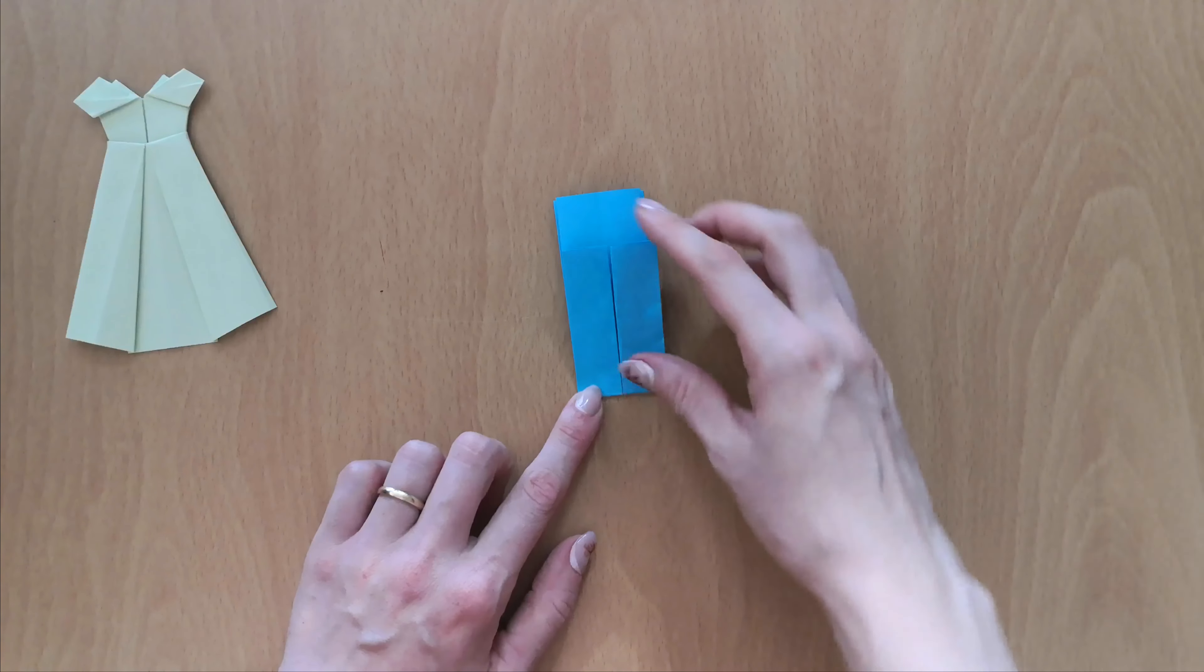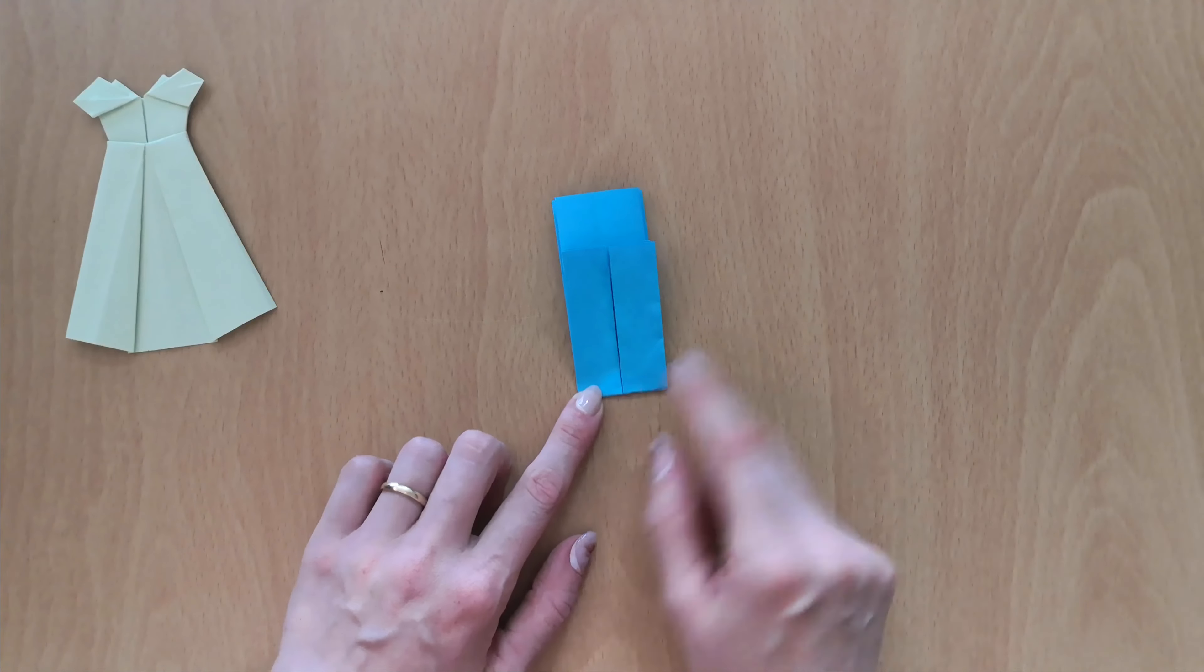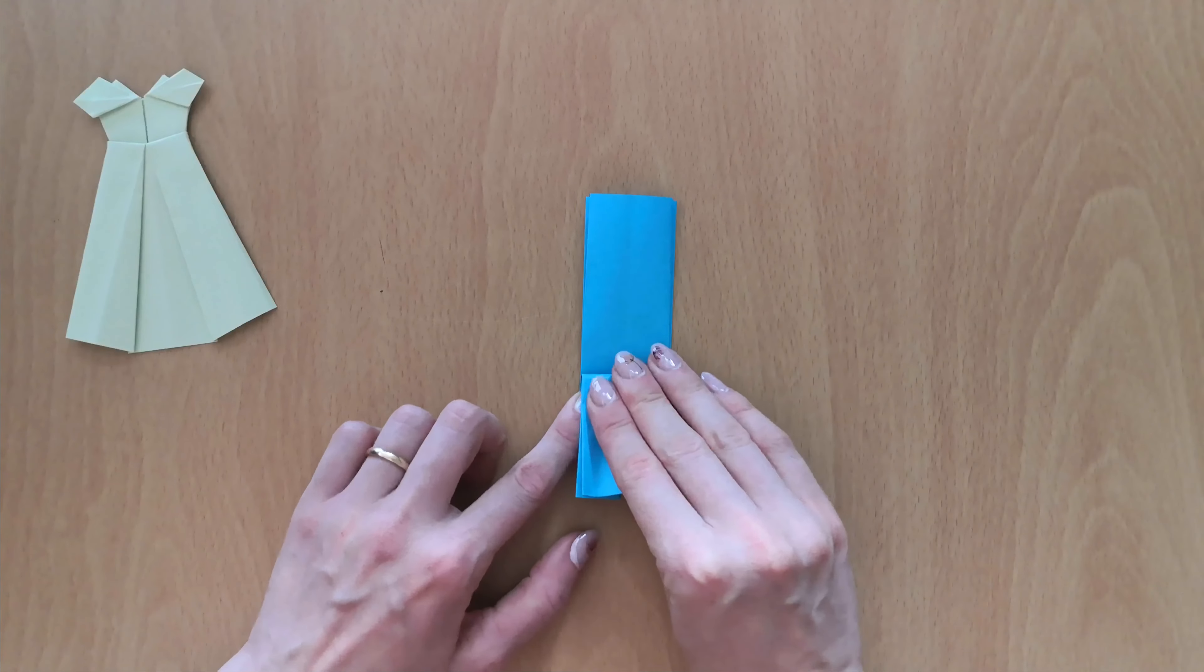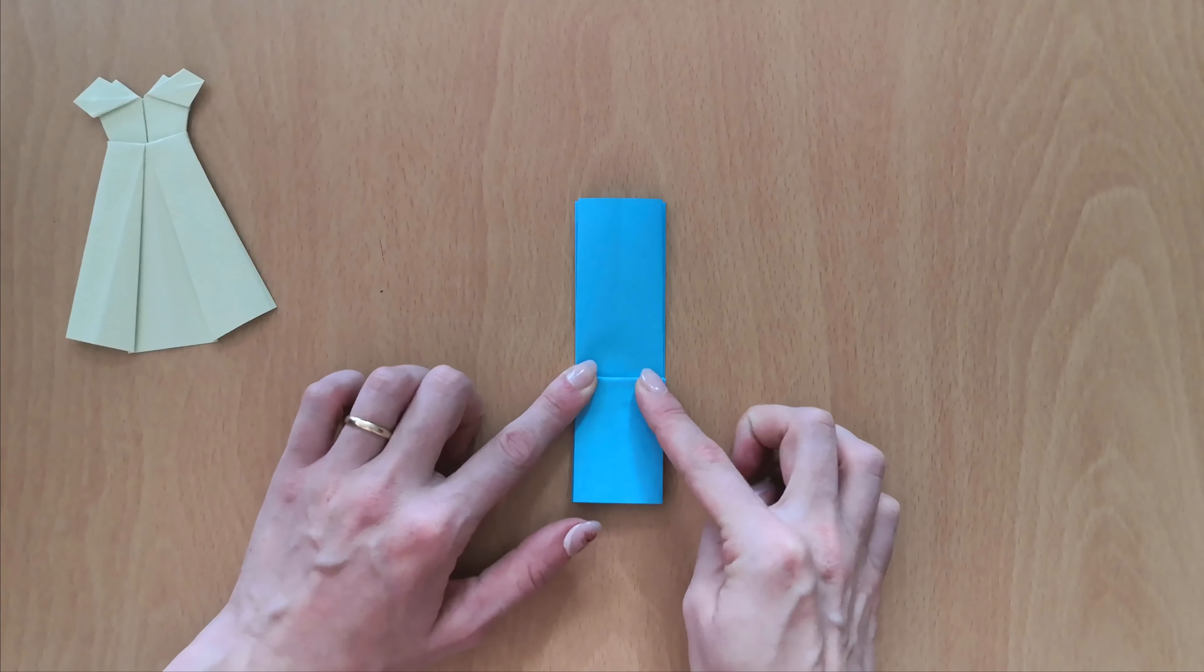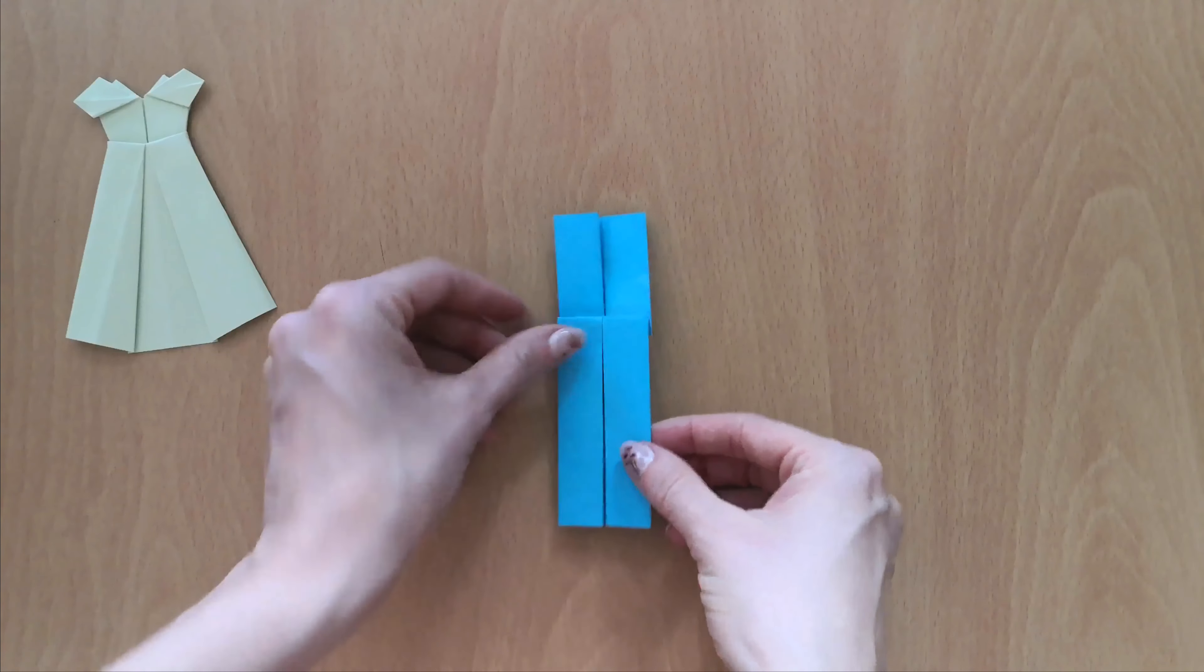And now take the upper layer and leave about a half cm here and fold it downwards. Like so, and now flip your paper over once more.